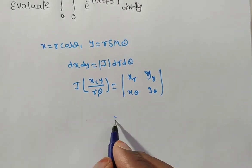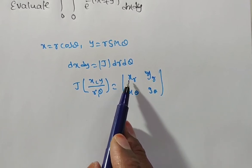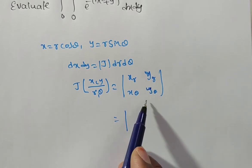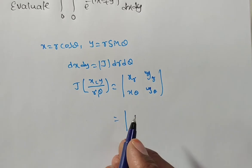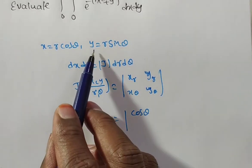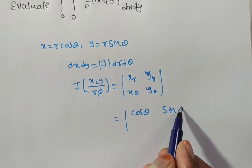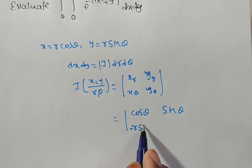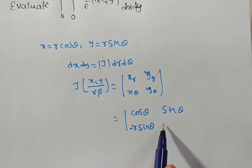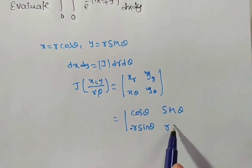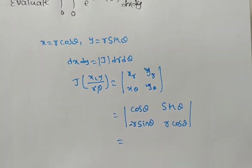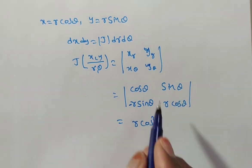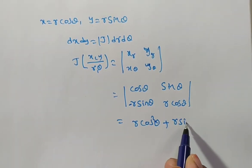So x_r is dou x by dou r, y_r is dou y by dou r, x_theta is dou x by dou theta, y_theta is dou y by dou theta. Differentiating: x with respect to r gives cos theta, y with respect to r gives sin theta, x with respect to theta gives r times minus sin theta, and y with respect to theta gives r cos theta. Simplifying the determinant: cos theta times cos theta gives r cos squared theta, minus minus r sin theta times sin theta gives r sin squared theta.